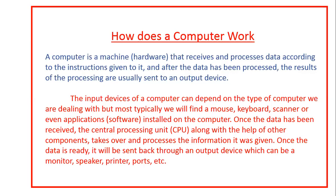Without hardware and software our computer cannot work — our computer system cannot run. So we need to have both hardware and software. Hardware and software are related to one another. Software is the soul of the computer system. In the absence of hardware, software cannot work. In the absence of software, hardware cannot work. So to complete our computer system we need to have both hardware and software.